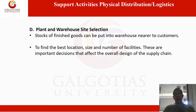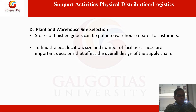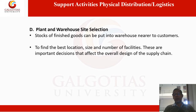Plant and warehouse site location is another support activity. A stock of finished goods can be put into a warehouse near to the customer. Finding the best location, size, and number of facilities are important decisions that affect the overall design of the supply chain.